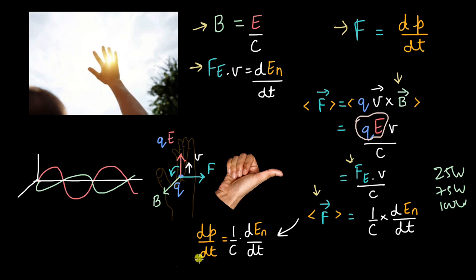So eventually what remains is the amount of momentum that is transferred that is equal to one by C into the amount of energy that is transferred or absorbed. So that is how momentum and energy are related in the case of light.